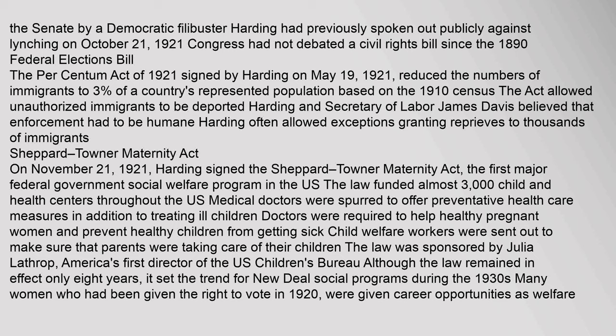The Per Centum Act of 1921, signed by Harding on May 19, 1921, reduced the numbers of immigrants to three percent of a country's represented population based on the 1910 census. The act allowed unauthorized immigrants to be deported. Harding and Secretary of Labor James Davis believed that enforcement had to be humane. Harding often allowed exceptions, granting reprieve to thousands of immigrants. On November 21, 1921, Harding signed the Sheppard-Towner Maternity Act, the first major federal government social welfare program in the U.S.